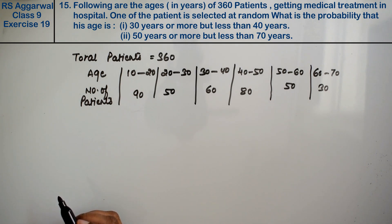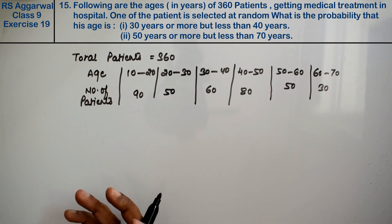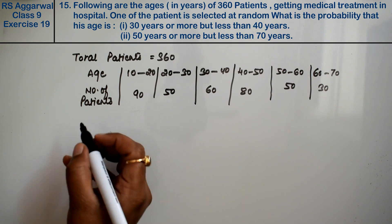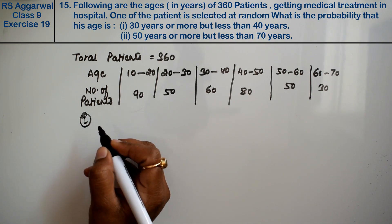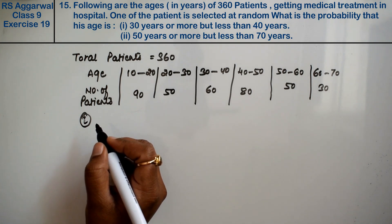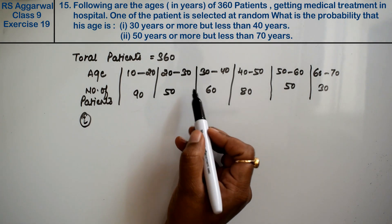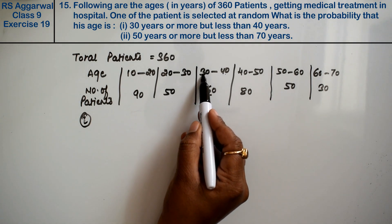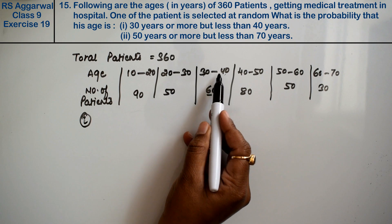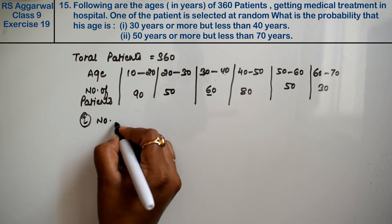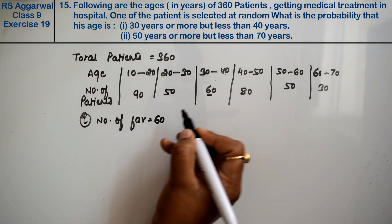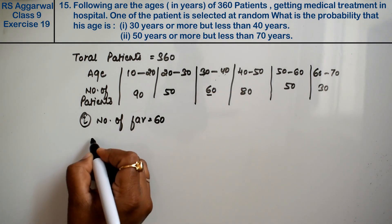One of the patients is selected at random. What is the probability that his age is between 30 and 40?